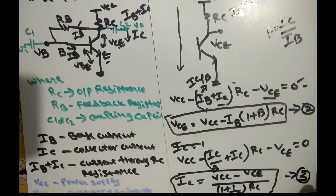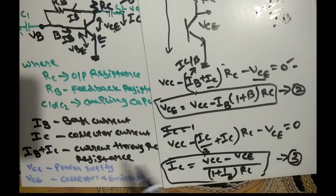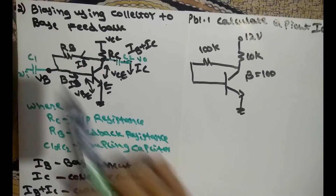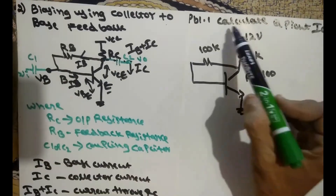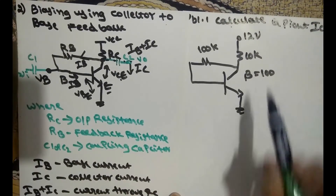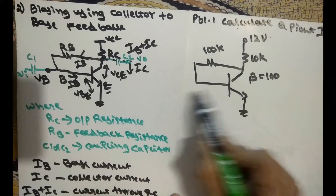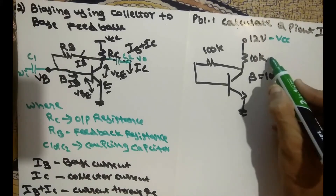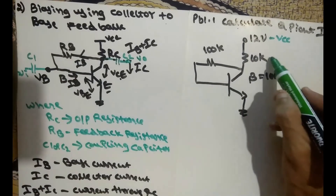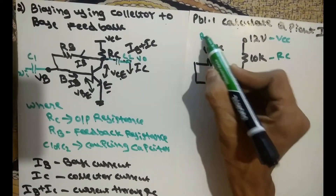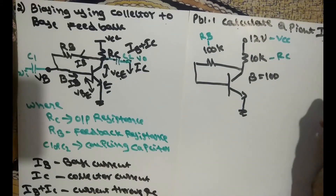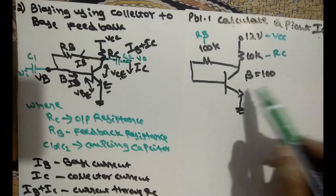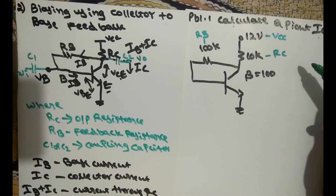This third equation is not always required because we can directly find IC if we know IB and beta. In the worst case, we can use this relation. Problem: Calculate the Q point IC and VCE for the given circuit with VCC equals 12V, RB equals 100kΩ, RC equals 10kΩ, and beta equals 100.